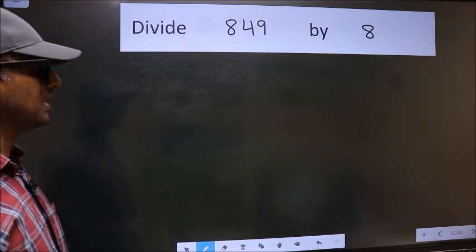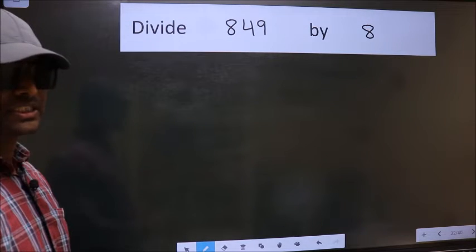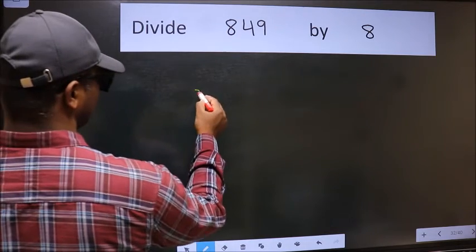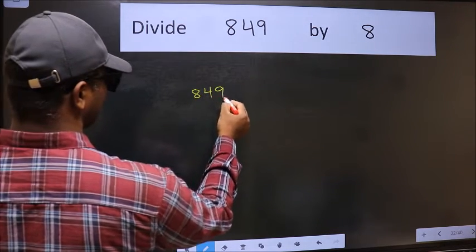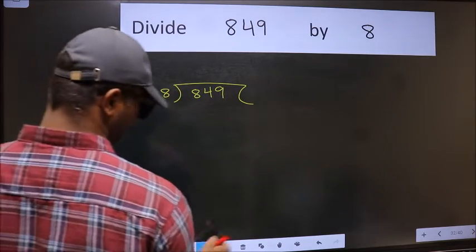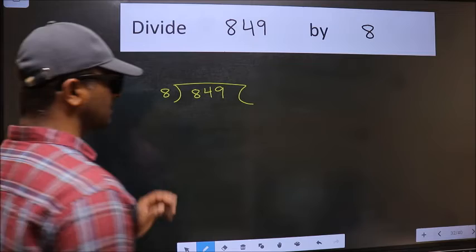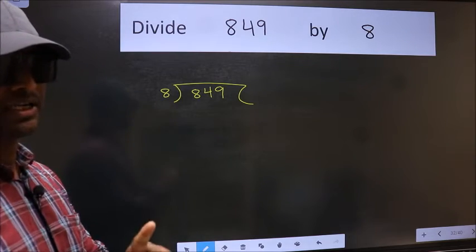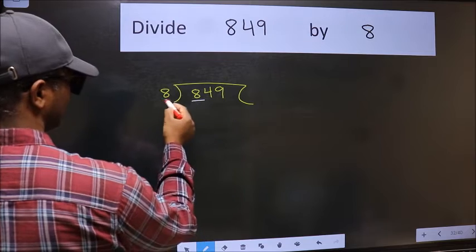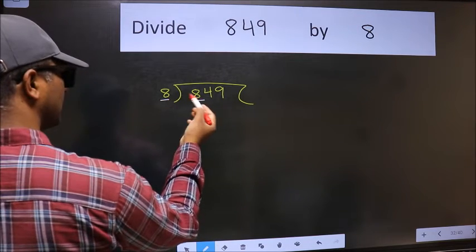Divide 849 by 8. To do this division, we should frame it in this way: 849 here and 8 here. This is your step 1. Next, here we have 8 and here 8. When do we get 8 in 8 table? 8 once 8.